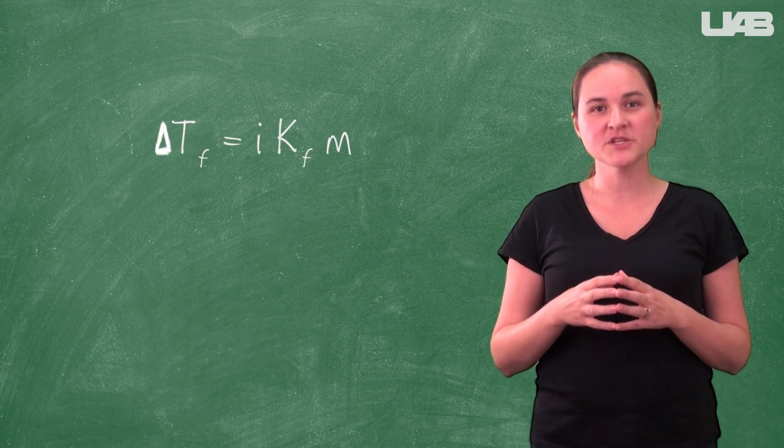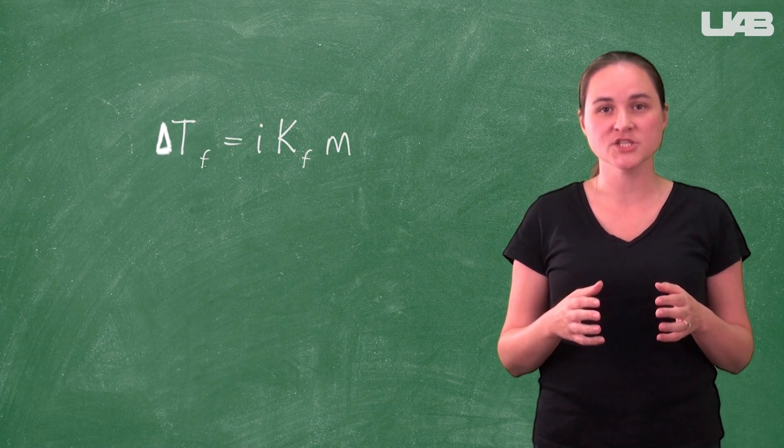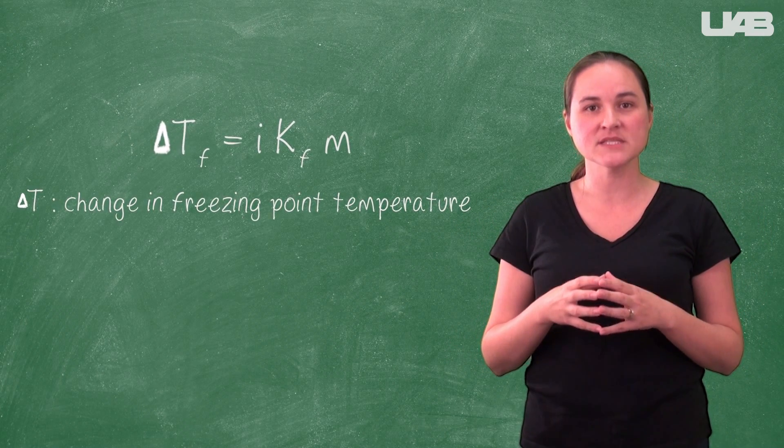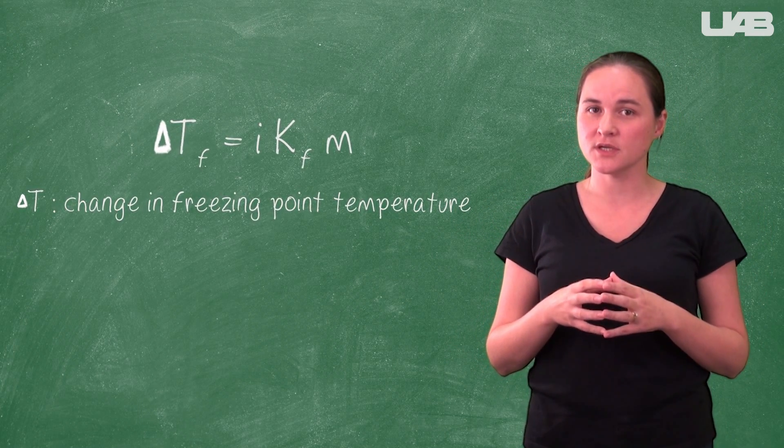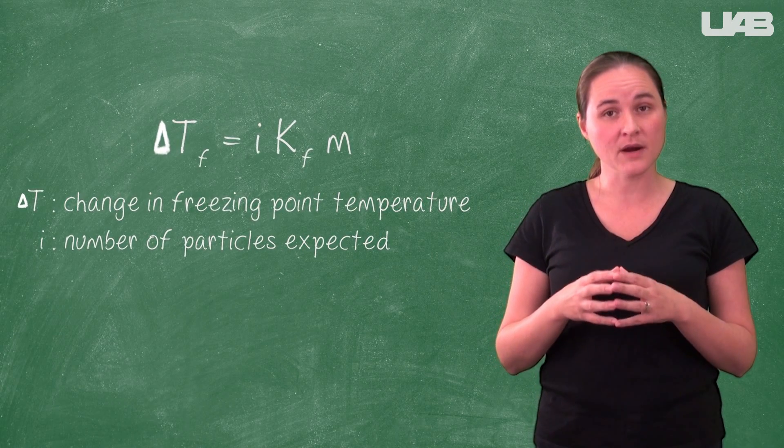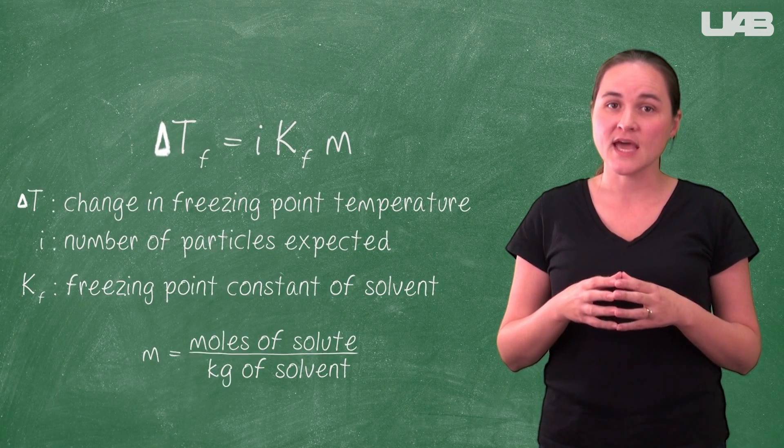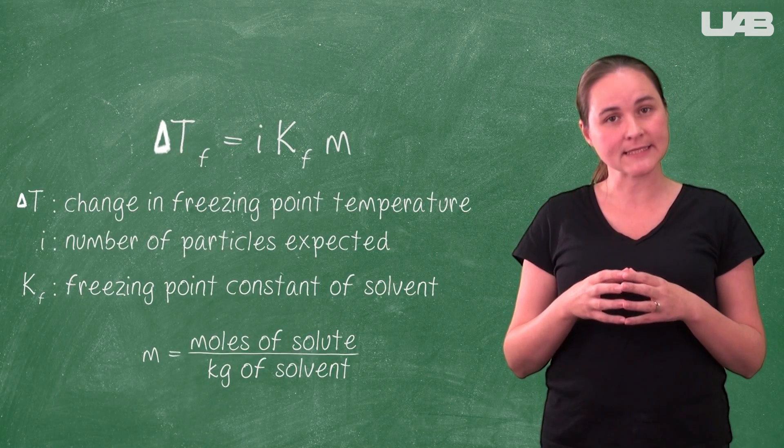The relationship that shows how much the freezing point will change is represented by this equation, where the delta T means the change in the freezing point temperature, the i is the number of particles expected, Kf is the freezing point constant of the solvent, and the lowercase m is the molality.